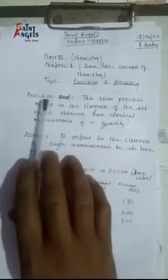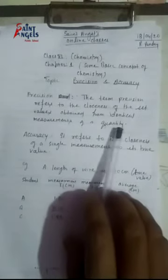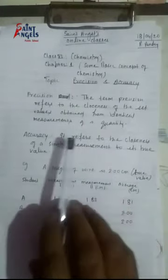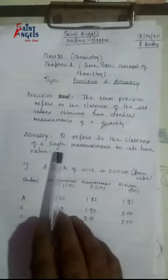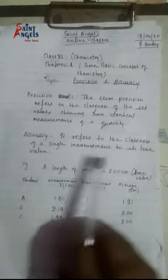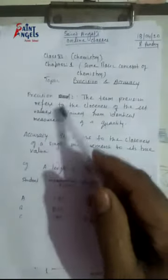Now I will discuss Precision. The term Precision refers to the closeness of the set values obtained from the identical measurement of a quantity. Accuracy refers to the closeness of a single measurement to its true value. Now let us see what is the difference between Precision and Accuracy and the meaning of these two terms.